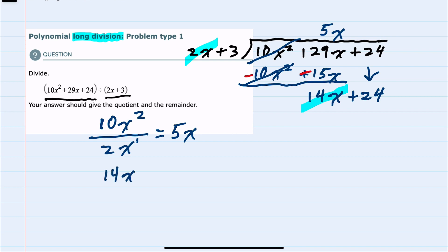We have 14x divided by 2x. And here, the x's will cancel. And 14 divided by 2 is just 7. So my next term in the quotient is 7.